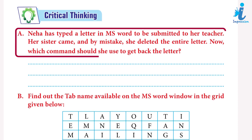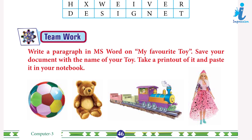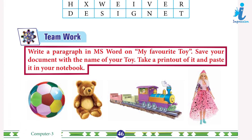Critical thinking: Nia typed a letter in MS Word to submit to her teacher. Her sister came and by mistake deleted the entire letter. Which command should she use to get back the letter? Do it yourself. Find out the tab names available on the MS Word window: Layout, Insert, Design, Home. Team work: write a paragraph in MS Word on 'My Favorite Toy,' save your document with the name of your toy, take a printout, and paste it in your notebook.